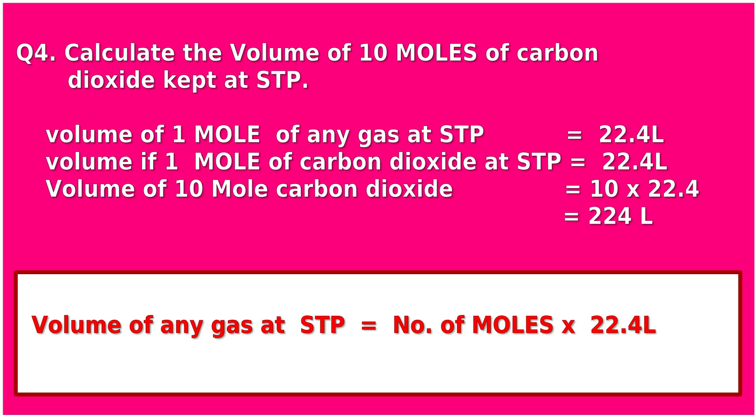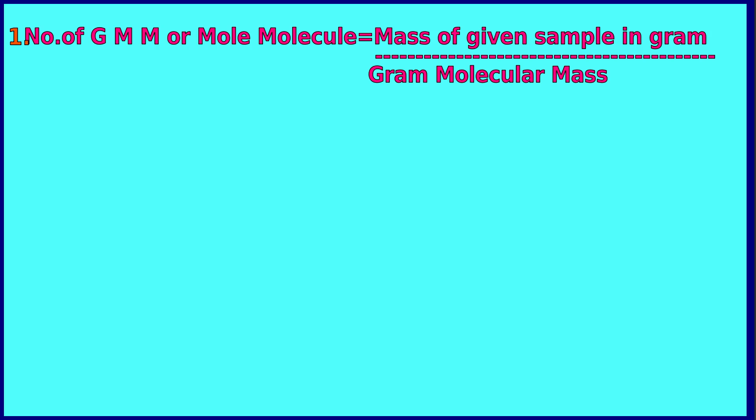By multiplying the number of moles with 22.4, we can calculate the volume of any gas at STP. This is what we found from these calculations. Let's look at the six formulas.